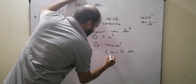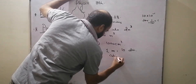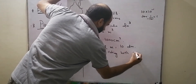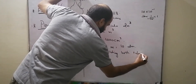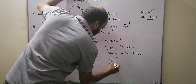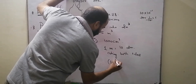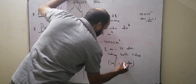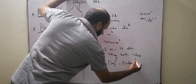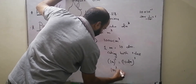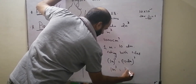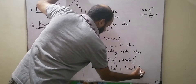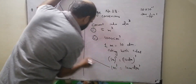Cubing both sides: 1 meter cubed is equal to 10 decimetre cubed, which equals 1000 decimetre cubed.